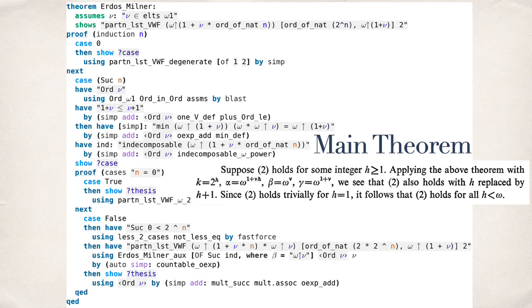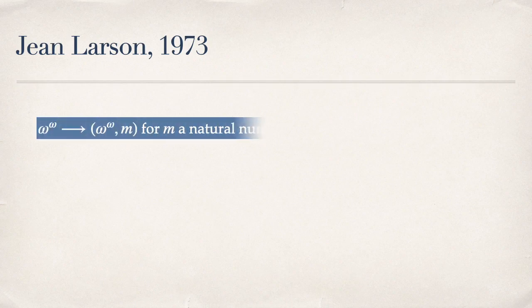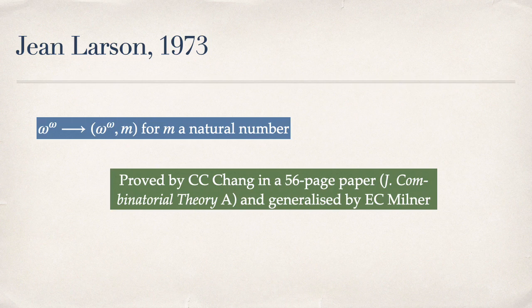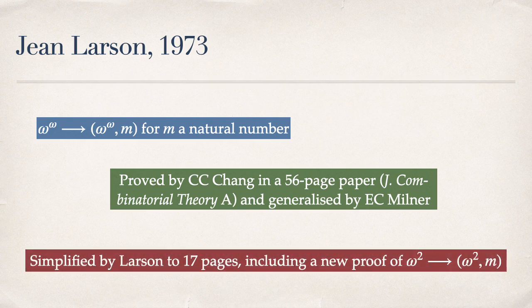Now we move to Larson's paper, which is the main goal of the work. The original proof by Chang took 56 pages and appeared in the combinatorial theory series. Chang proved it for m=3 and Milner generalized it for arbitrary m — years of work just to generalize from three to m.